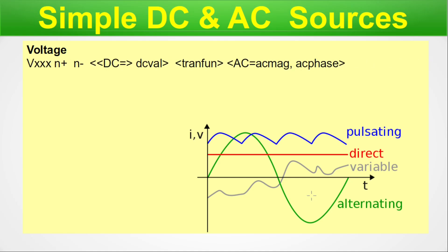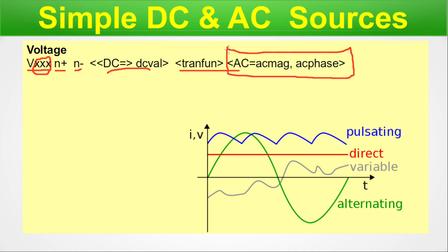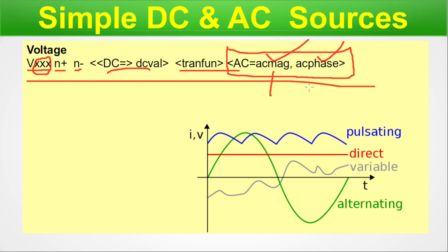For voltage, the syntax is: V followed by an alphanumeric identifier, then node 1 and node 2. The DC value goes here, and if it has a function it goes here as well. In case AC is coupled with it, you write the AC magnitude and AC phase. You know about phase and magnitude from your textbook, so those values go here. This is the syntax for a voltage source.